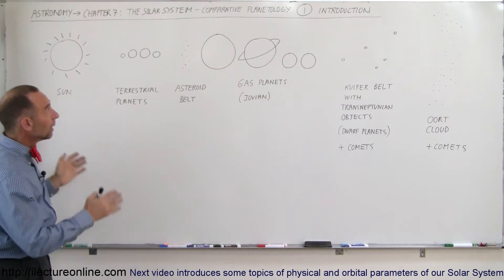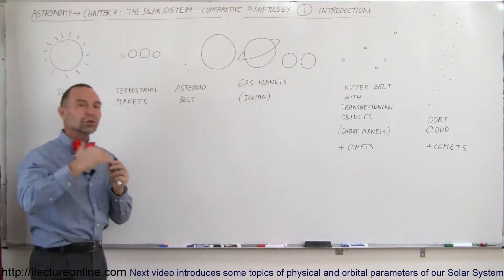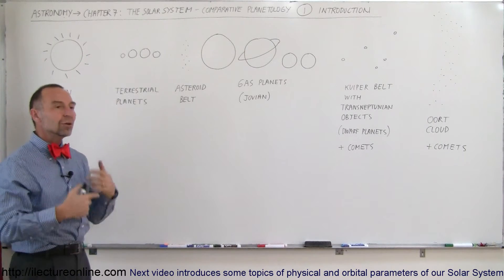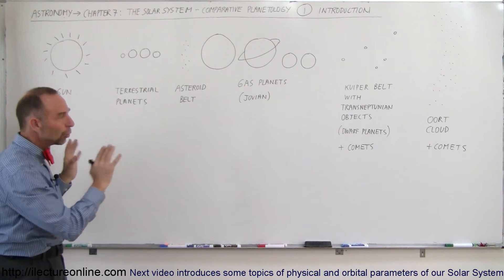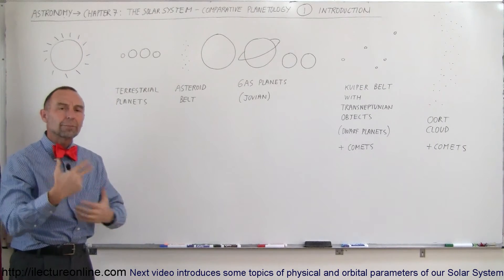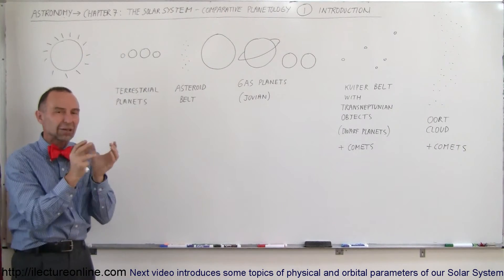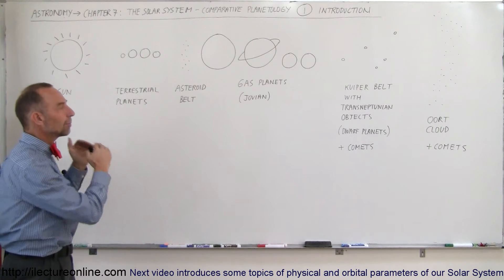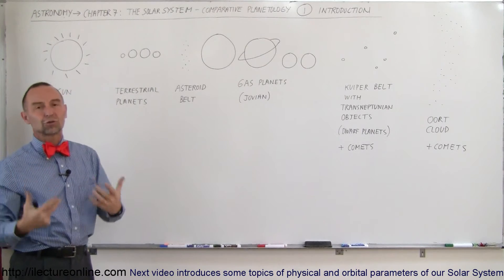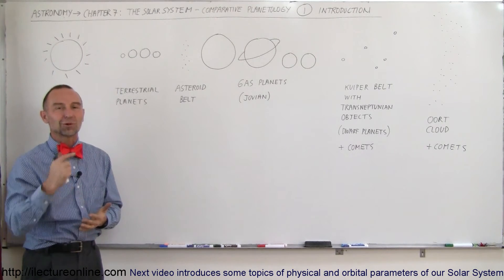Now, what we mean by comparative planetology is we're going to compare, first of all, the terrestrial planets to the gas planets, and then we're going to compare all the planets in terms of size, distance from the Sun, density, rotational speed, and so forth. And we'll look at all those various aspects so we get a good picture of what our solar system is about in comparison to one another. And then we're going to go into more detail about talking about each of the planets, the asteroids, their moons, and so forth. But we're going to start out more in general terms, comparing all the planets in various aspects to get a feel of what our solar system is like. This is the introduction, and there's many more videos to come in this chapter. So stay tuned.